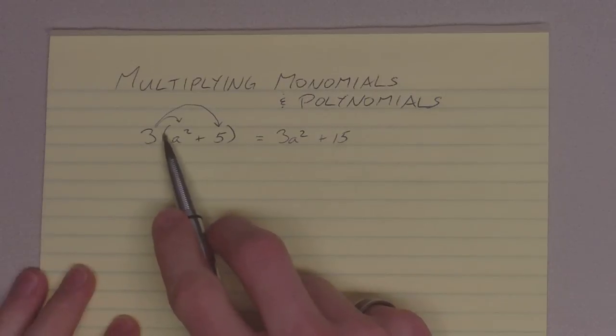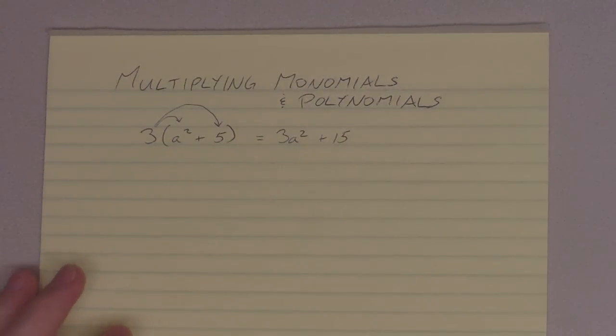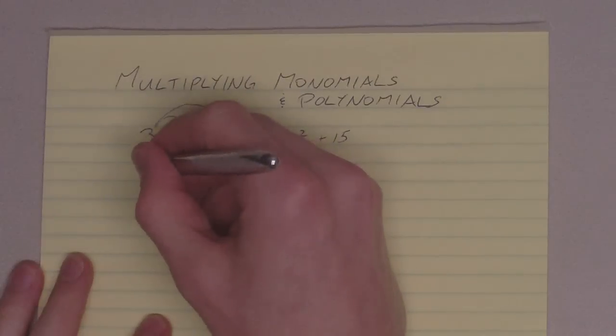Basically what this boils down to here is we've got two terms, two sets of monomials being multiplied together. Let's try one that's a little bit trickier.